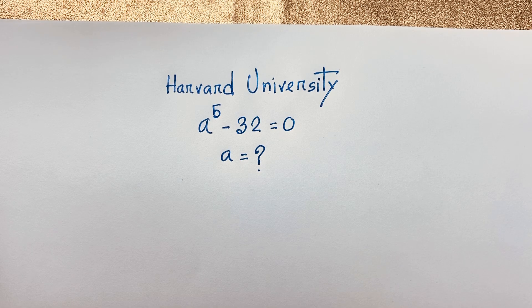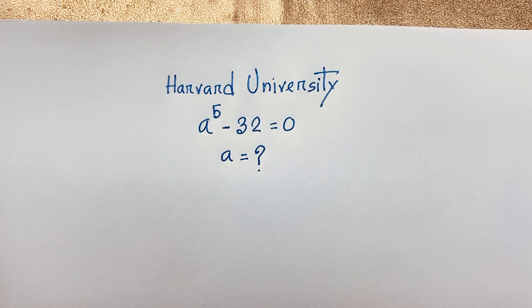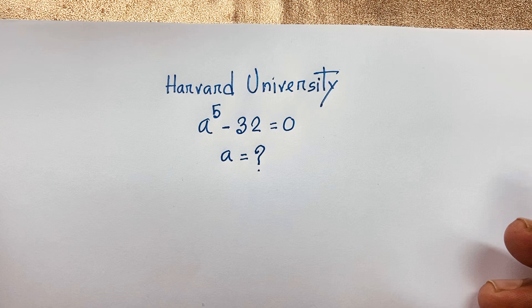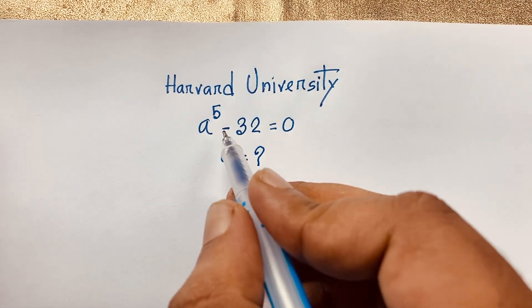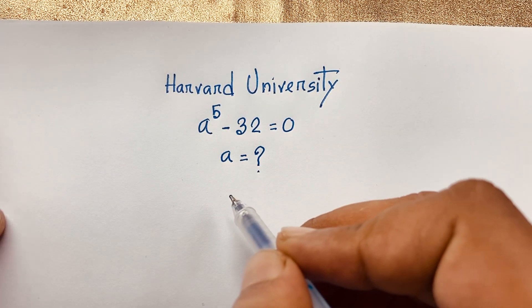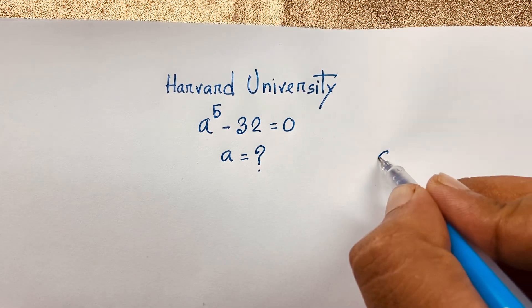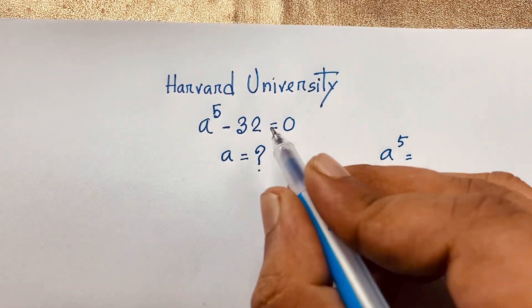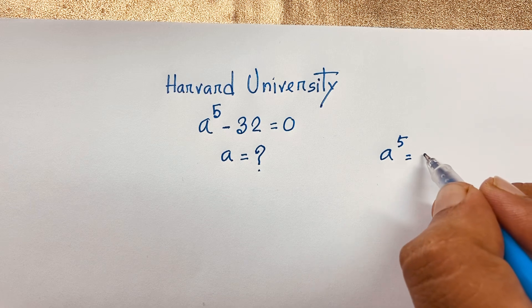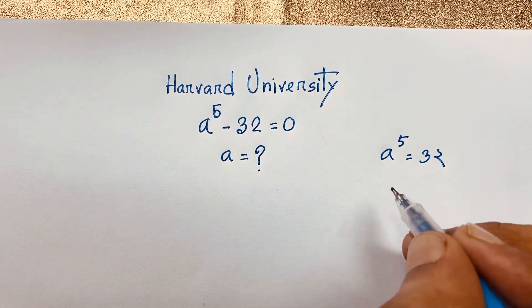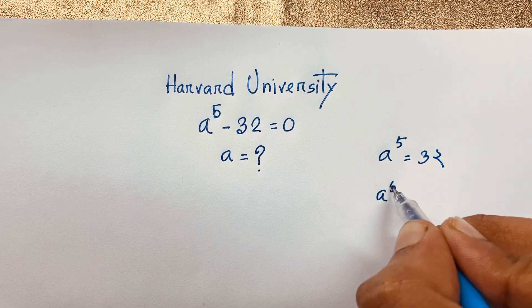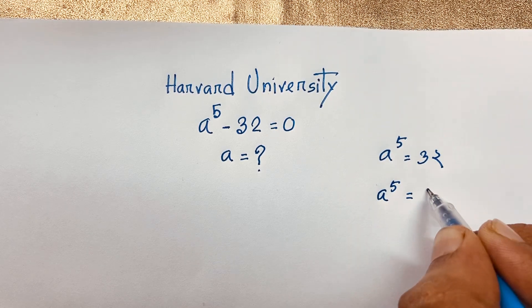Hello everyone. In this video we solve a nice exponential equation: a to the power 5 minus 32 is equal to zero. We'll find out what a is equal to. First of all, we have a to the power 5 minus 32, so if we move 32 to the other side it becomes positive 32. Then we see a to the power 5 is equal to 32, which is 2 to the power 5.